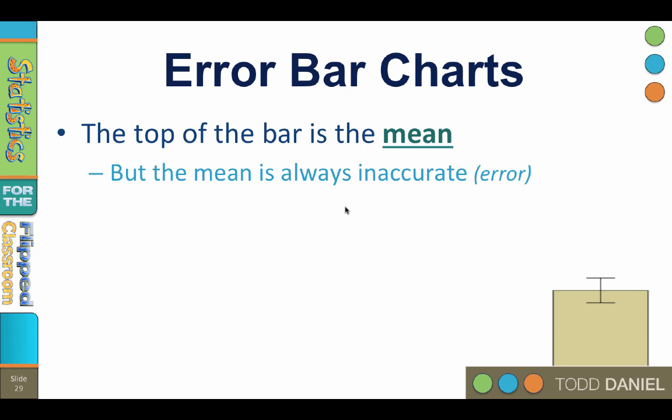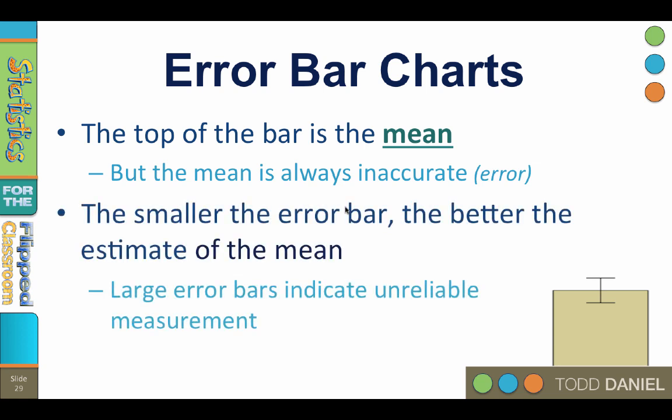Error bars help clarify the accuracy of the mean by showing an error estimate. We balance precision with confidence. When scores in our variable are similar to each other, the mean represents the other scores very well. A mean with a small error bar tells us that the mean is a very accurate predictor. The smaller the error bar, the better the estimate of the mean.